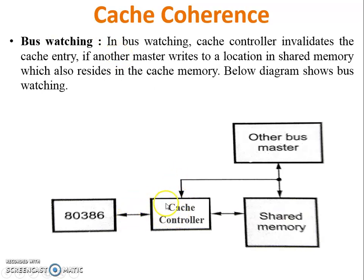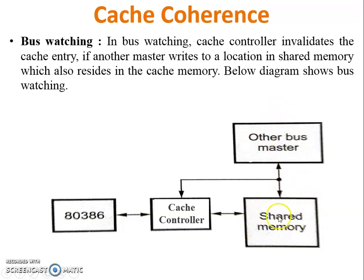In bus watching, the cache controller invalidates the cache entry if another master writes to a location in memory that also resides in cache memory. In the diagram, the processor, cache controller, shared memory, and bus master are shown. If the bus master changes any data block inside shared memory, the cache controller watches the bus and detects which block was modified, then updates the cache accordingly, protecting against the cache coherence problem.